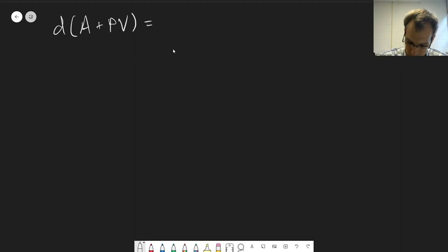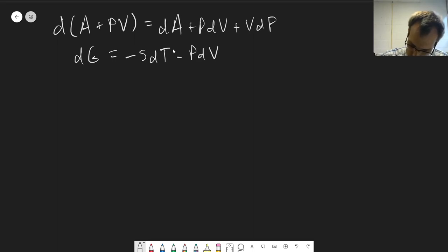And so we can use... That's going to be... So this is dG. So we can use dA plus pDV plus vDP and use the relationship we just derived for dA.